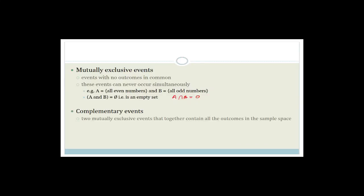Complementary events are two mutually exclusive events that together contain all the outcomes in the sample space. If the event is called A, then the complement is called not A. The notation would be A-dashed. This notation means not A. Complementary events are two mutually exclusive events that together contain all the outcomes in the sample space.